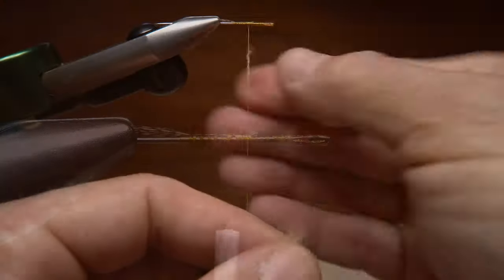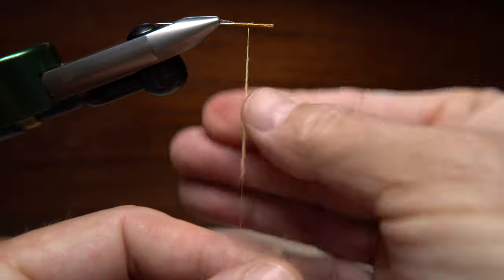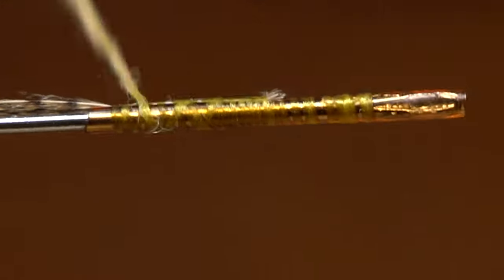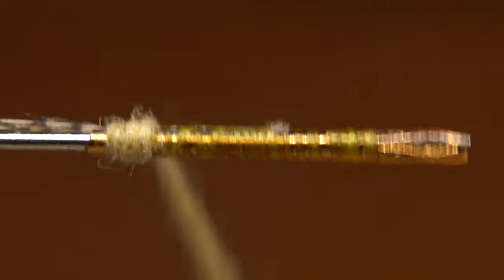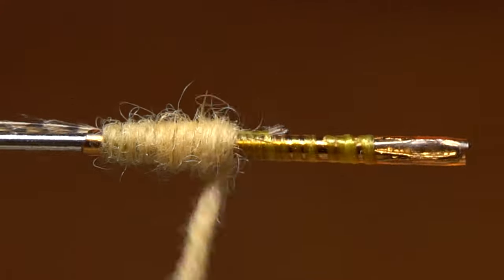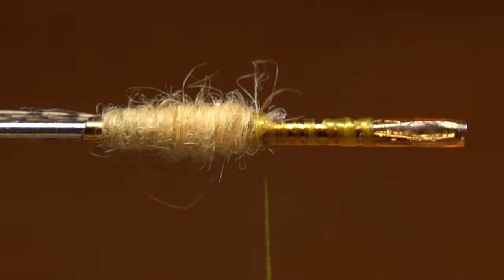Use your choice of dubbing to create a slender noodle on your tying thread. Start taking touching wraps with the noodle to create the extended body of the fly. Once you're satisfied with its length, do a five or six turn back to front whip finish.